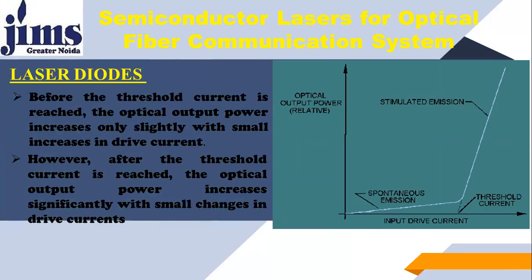Before the threshold current is reached, the optical output power increases only slightly with a small increase in drive current. However, after the threshold current is reached, the optical output power increases significantly with a small change in drive current, as is clear from the picture. You always need a minimum amount of current — the threshold current — to get stimulated emission. Lasers operate at currents above threshold.